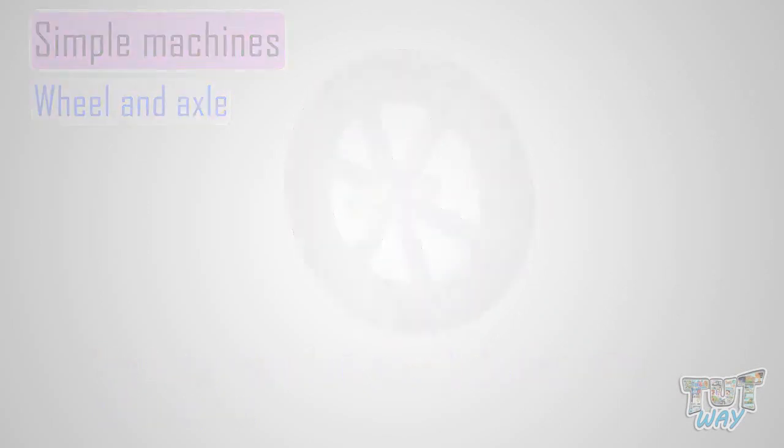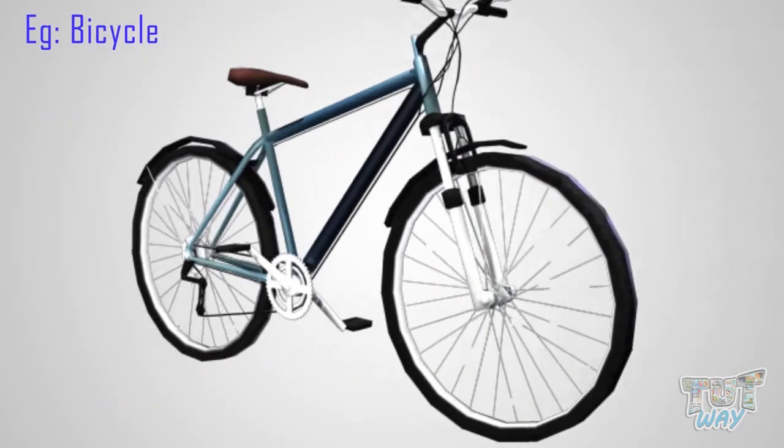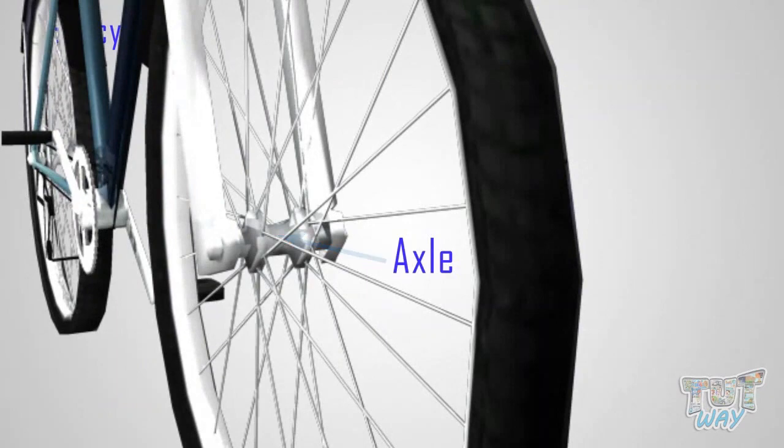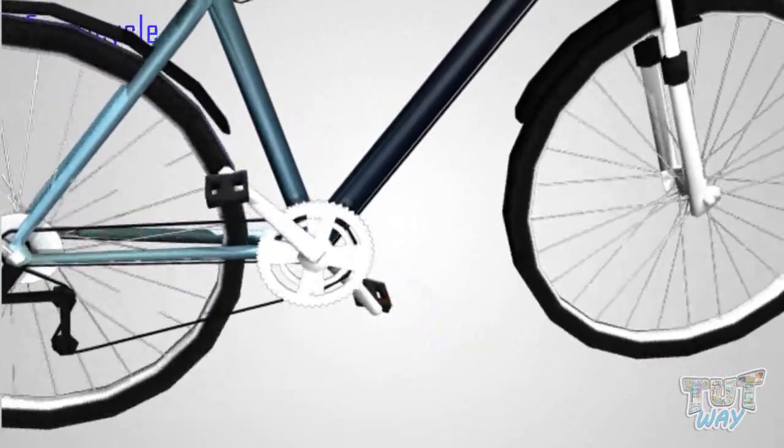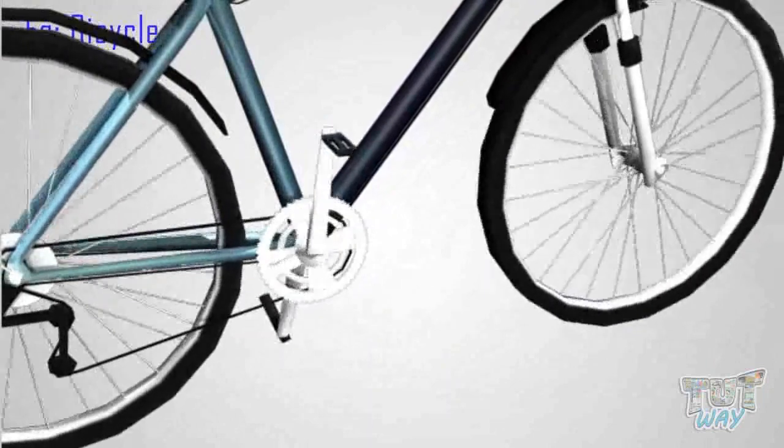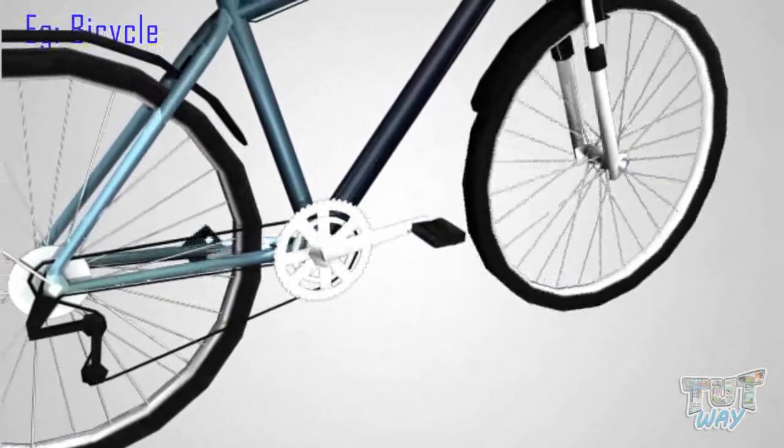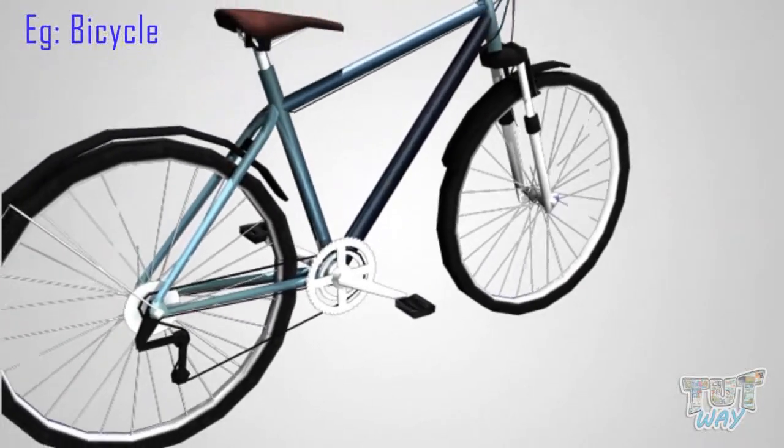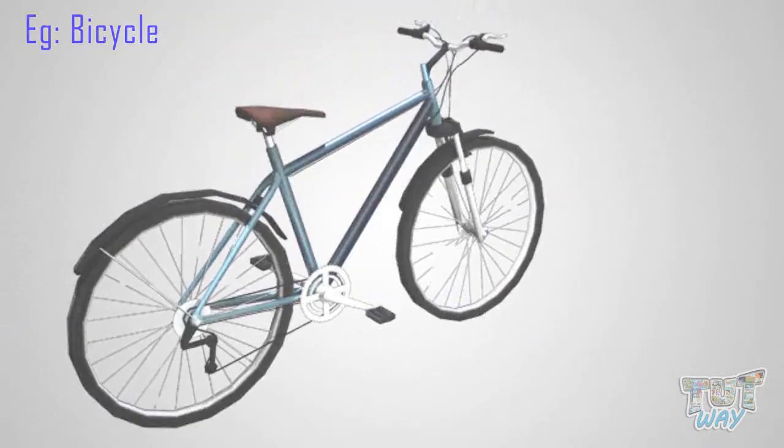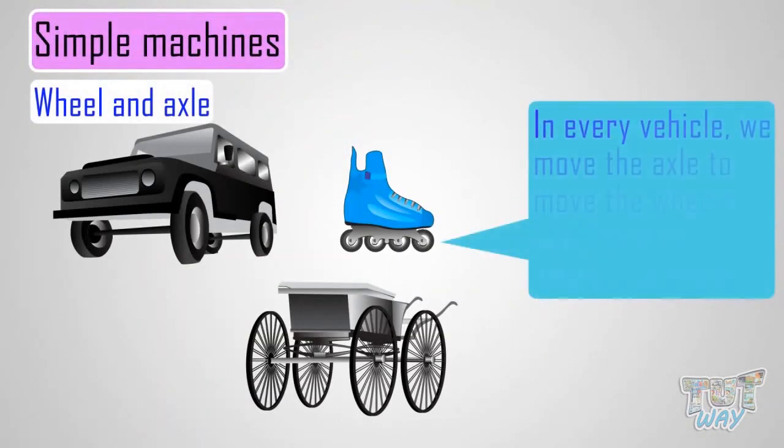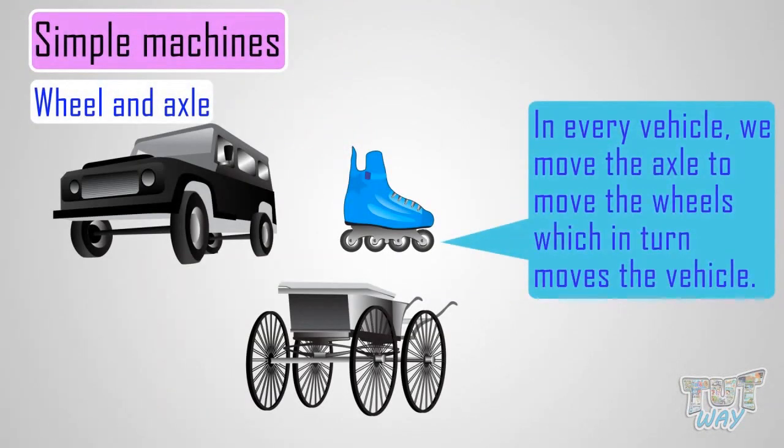Example: Bicycle wheels are attached to the axle, and we move the axle with pedals. And the faster we move the axle, the faster the wheels move or the cycle moves. In every vehicle, we move the axle to move the wheels, which in turn move the vehicle.